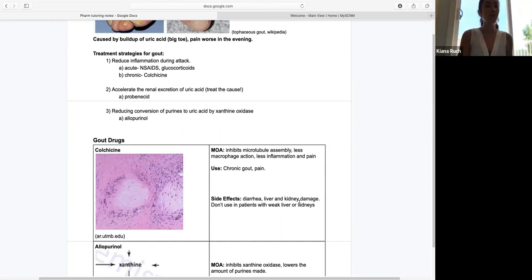We're going to learn about colchicine. Another way to treat gout is by accelerating the renal excretion of uric acid, getting more of that uric acid out of the body so it can't build up in the joints. A drug that does that is probenicid. The third way to treat gout is by reducing the conversion of purines to uric acid by xanthine oxidase.